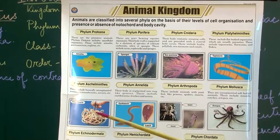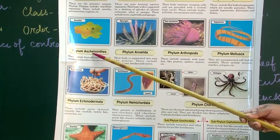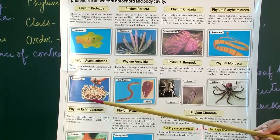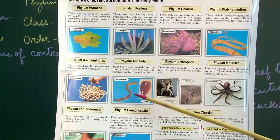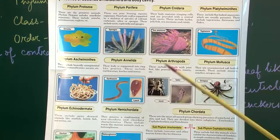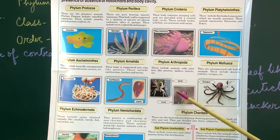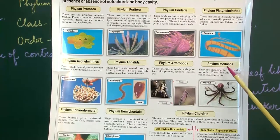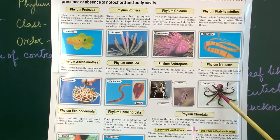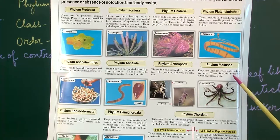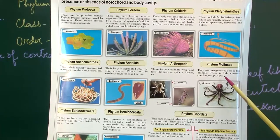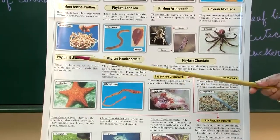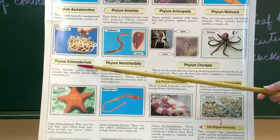Next we moved on to Nematoda — also called Aschelminthes — a group of roundworms; we learnt about Ascaris. Followed by Annelida, the phylum which includes earthworm and leeches. Followed by Arthropoda — consisting of prawns, spiders, and insects like silk moth and honeybee. Mollusca phylum consists of animals like octopus, and we showed you the apple snail. The last invertebrate we covered was starfish, belonging to phylum Echinodermata.